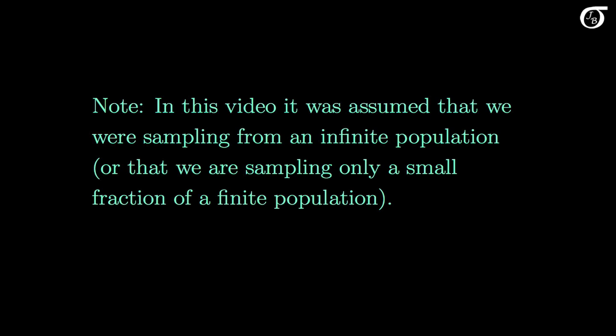One small note to finish: in this video it was assumed that we were sampling from an infinite population, or that we were sampling only a very small fraction of a finite population, which is typically the case in practice. In the event we are sampling a larger fraction from a finite population, the standard deviation of the sampling distribution of the sample mean changes, and we need to use something called a finite population correction factor. But the details of that are another talk for another day.